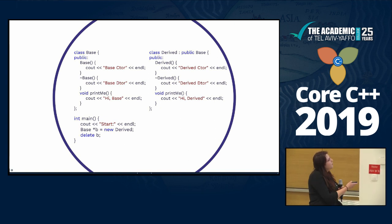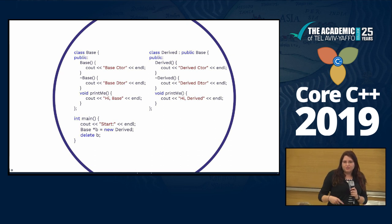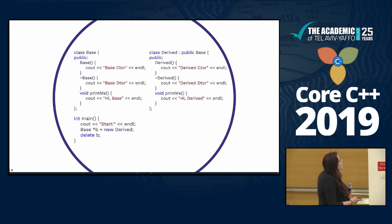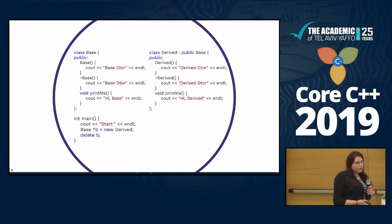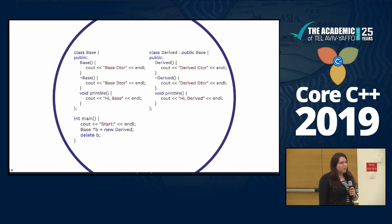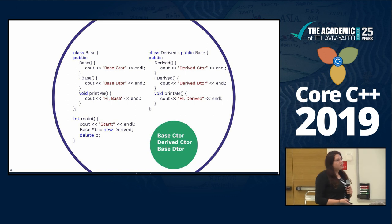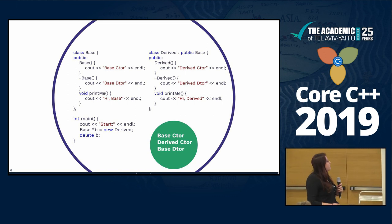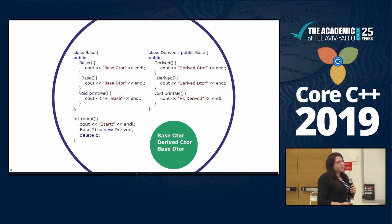Here I have my base class, and I have the base constructor and the base destructor, and I implement a print-me function. Here I have my derived class — I have constructor, destructor, and the print-me function. I use a base pointer here and I allocate my derived. What do you think will be printed here? So what destructor would that be?